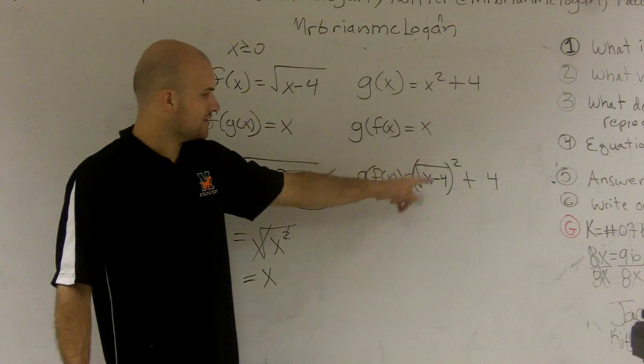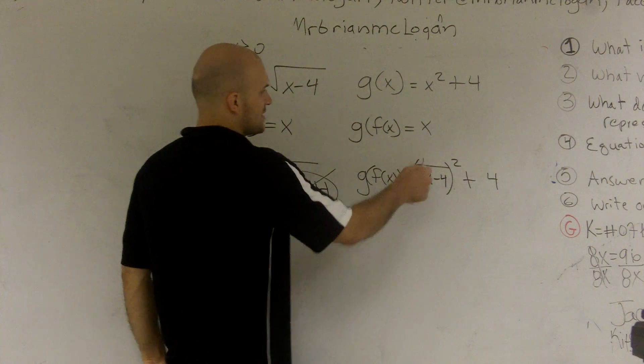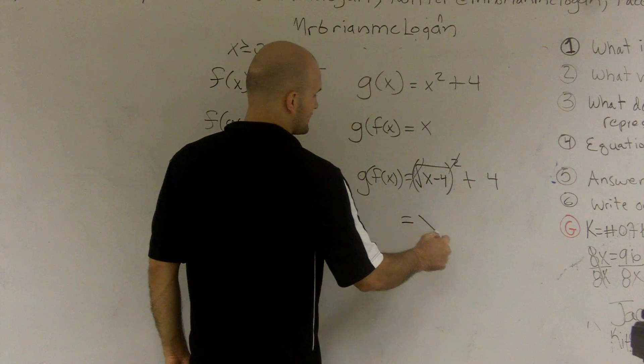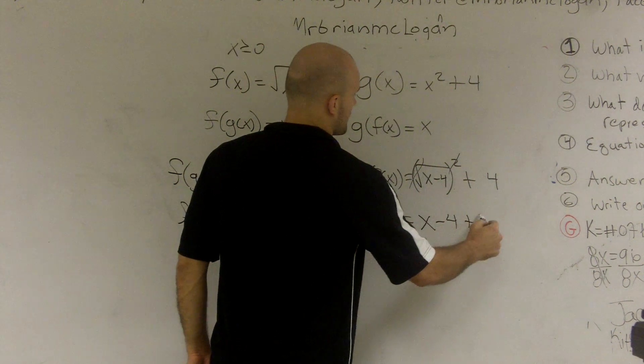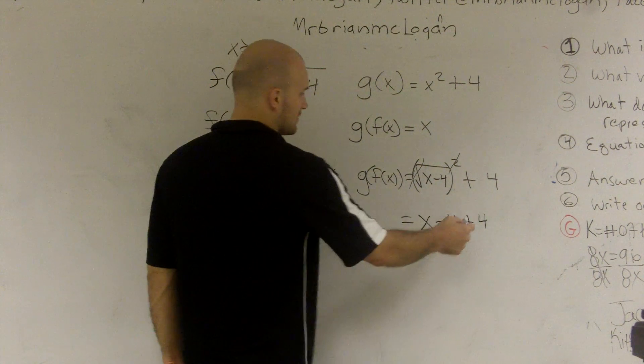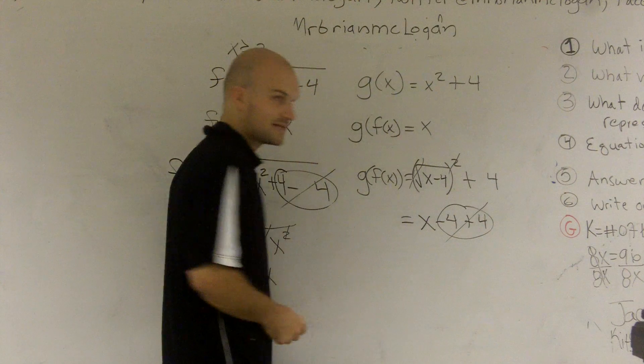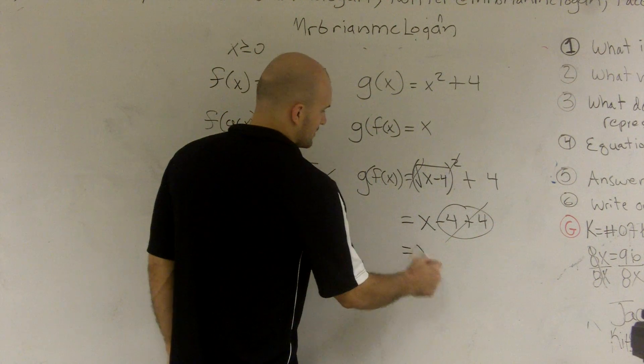Well, again, we look at this. What is the square root of something squared? It cancels out. So I'm left with x minus 4, plus 4. These cancel out, and I'm left with an x.